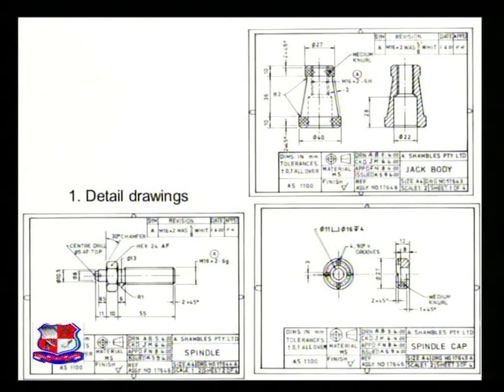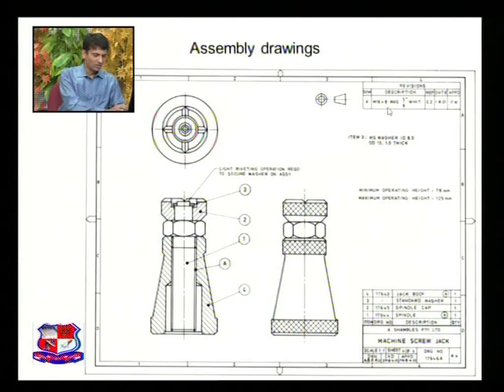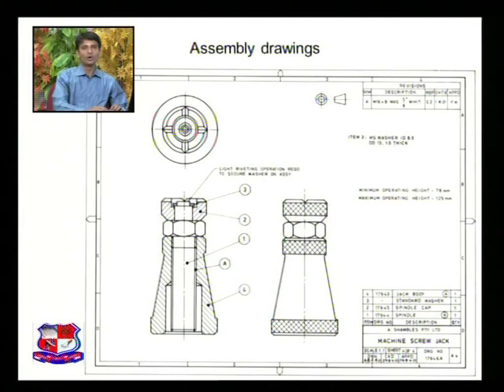This drawing shows the assembly of these three components. If we assemble all these components together, it makes an assembly as shown. The names of components are mentioned in the part list: number one is the spindle, number two is the spindle cap, number three is a standard washer, and number four is the jack body. A revision 'A' is represented, with description M16 by 8, width five-eighths inch. This is the top view and this is the side view of this assembly.